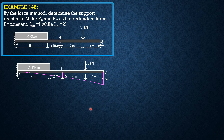By statics, we can solve for reactions at A. 20 times 6 plus 30, that's 150 upward. And the moment here, which is negative, so it is counterclockwise: 20 times 6 times 3 plus 30 times 12, and that is 720. Total 720. Then let's section.